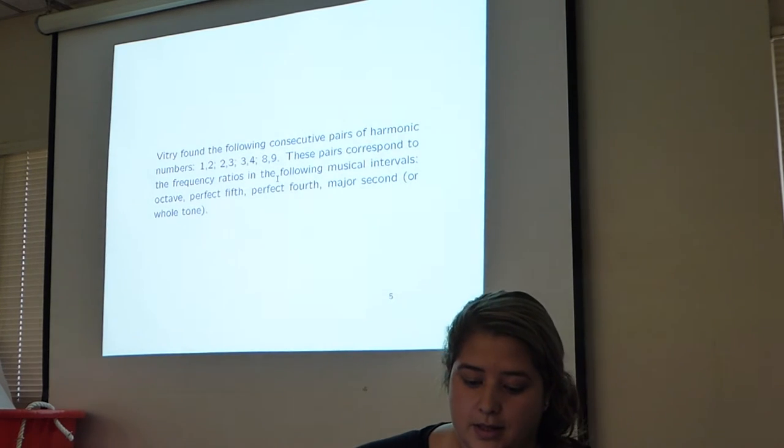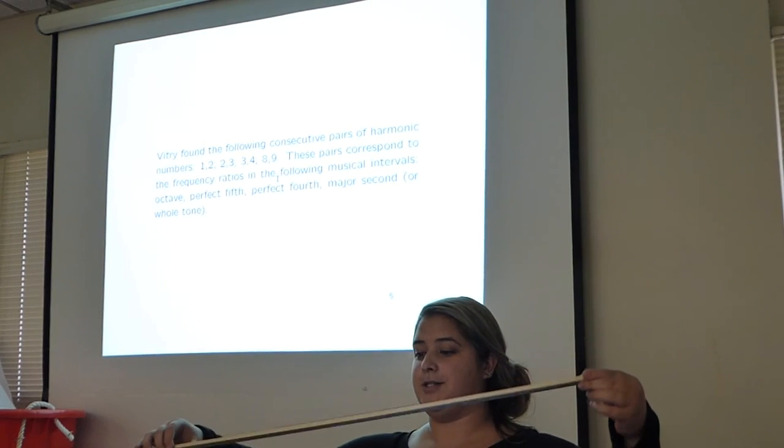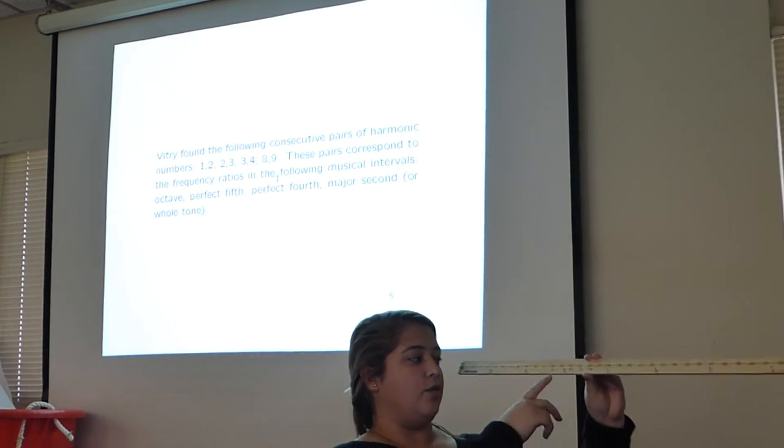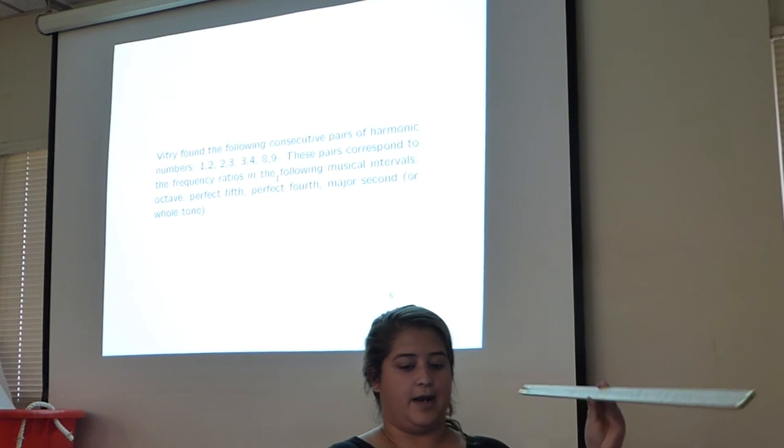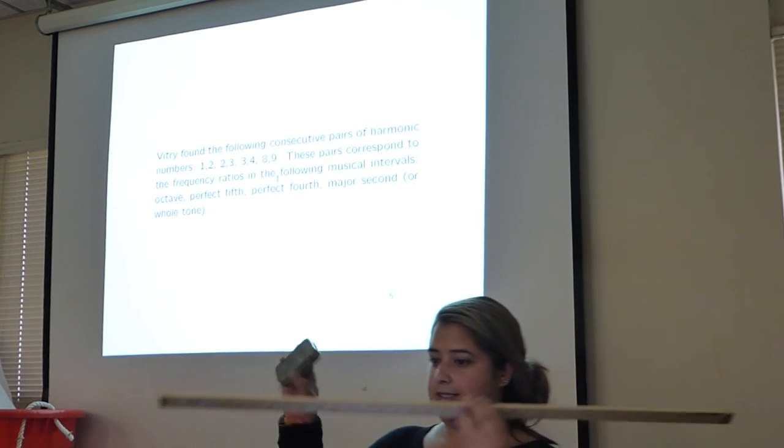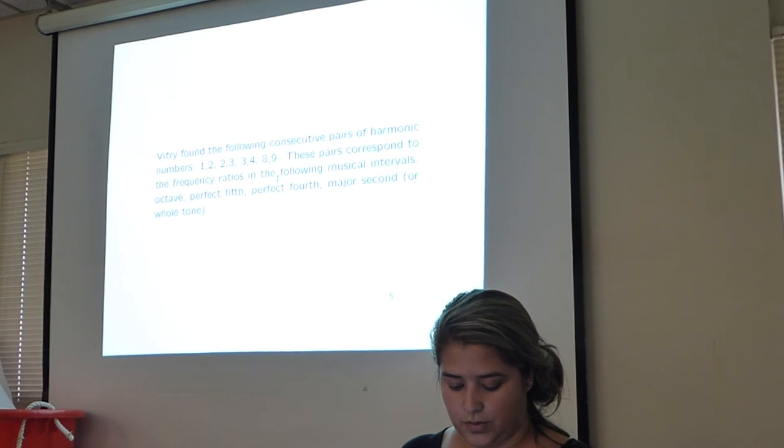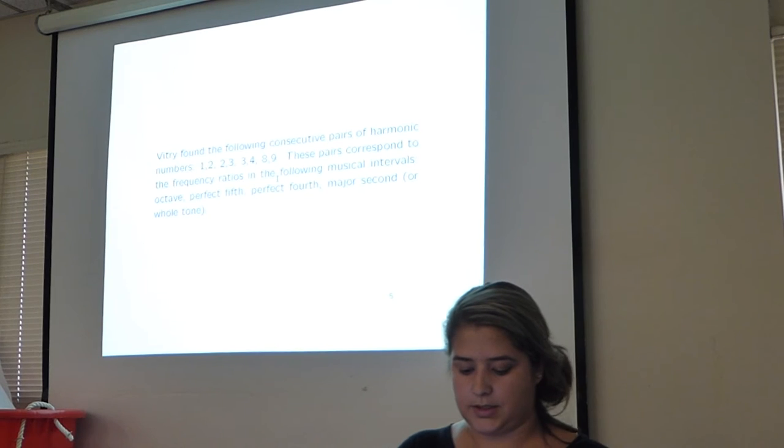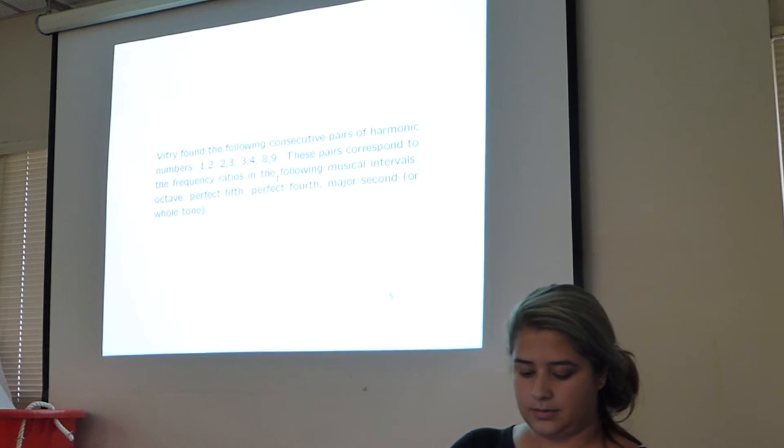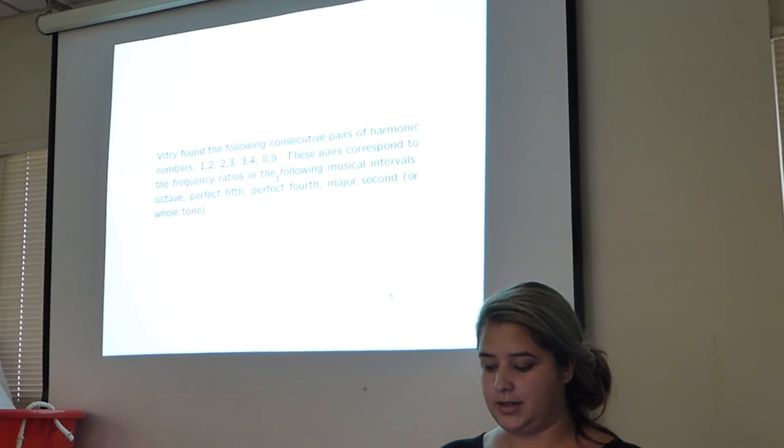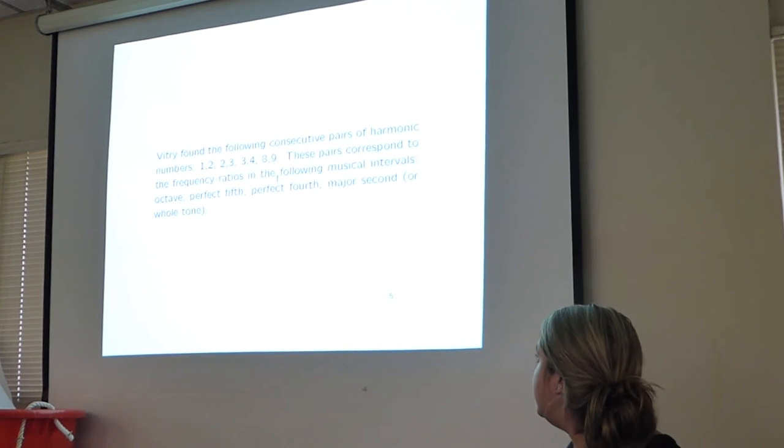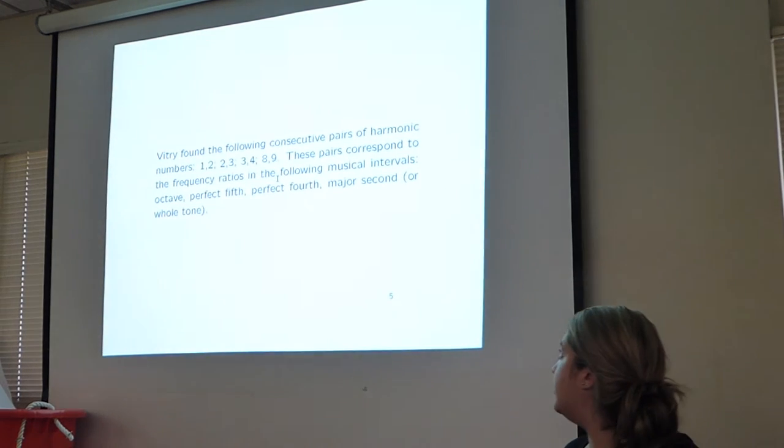So we made this diddly bow, and this is a yardstick. We have our ratios on here: 1, 2; 2, 3; 3, 4; 8, 9. I'm going to put it on the ratio of 1 to 2. If I strum this guitar string, it's actually like 1 octave higher. If you go to 2, 3; 3, 4, the ratios are as follows: perfect fifth, perfect fourth, and major second.